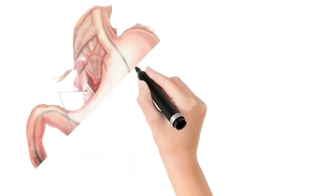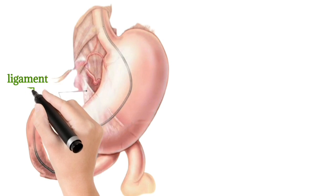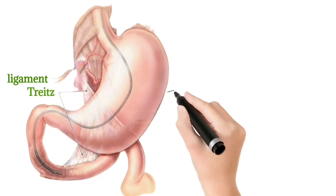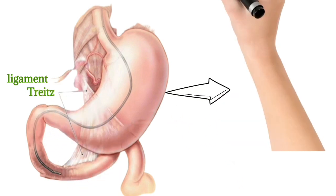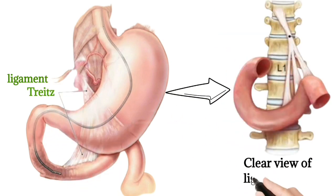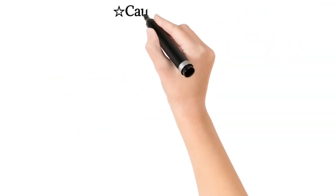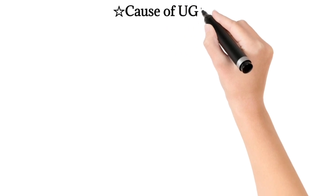This diagram shows the location of upper GI bleeding and lower GI bleeding. Above the ligament of Treitz is upper GI bleeding, and below is lower GI bleeding. You can see a clear view of the ligament of Treitz.